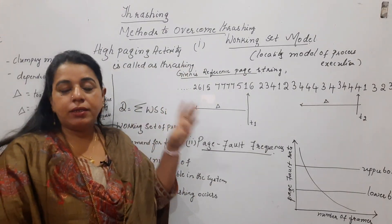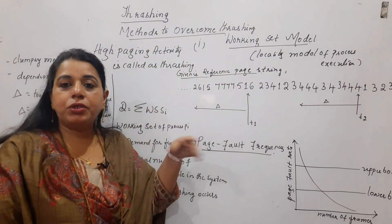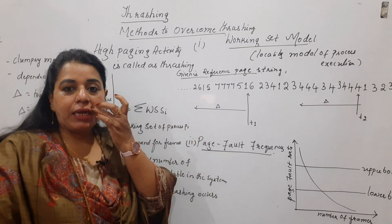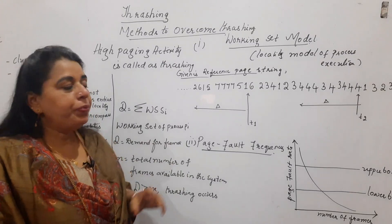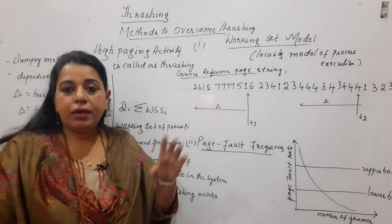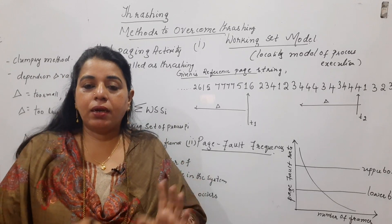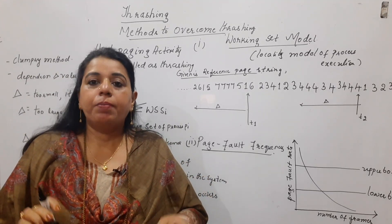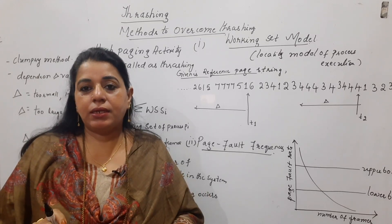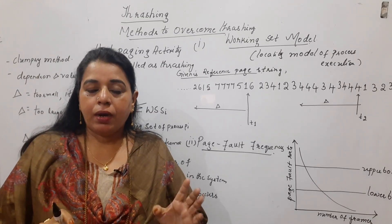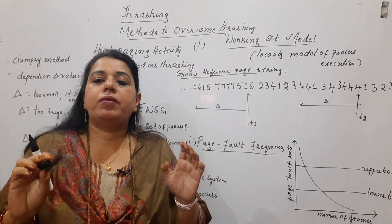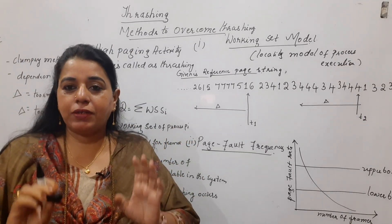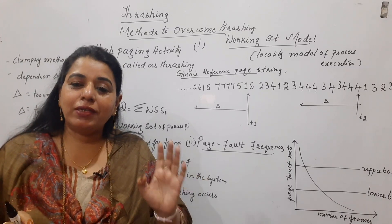What exactly is this? It is a solution to overcome the thrashing problem. Thrashing is a high paging activity. What we learned from the previous session is that processes are having a shortage of frames. Because they have a shortage of frames, it results in very frequent page faults. So, the simple idea is to allocate more number of frames to each process so that the processes will not suffer from page faults.